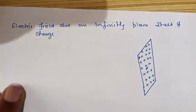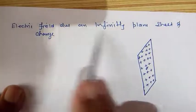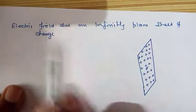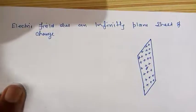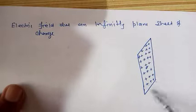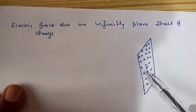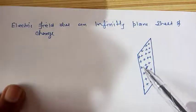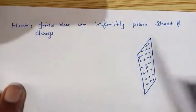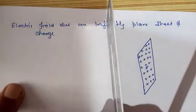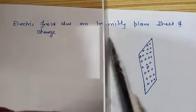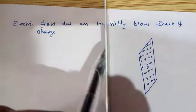Hello students, welcome. In this video we will discuss the electric field due to an infinitely plane sheet of charge using Gauss's theorem. Suppose we are having an infinitely plane sheet of charge having uniform surface charge density sigma on both sides. Both sides mean if you are having a sheet like this, the surface density on this side and surface density on this side will both be the same.